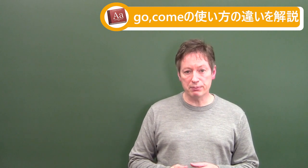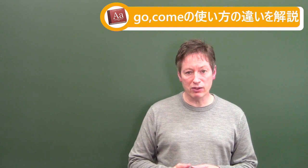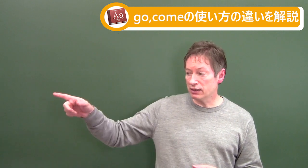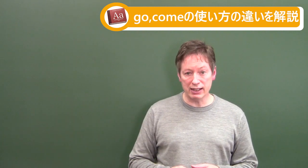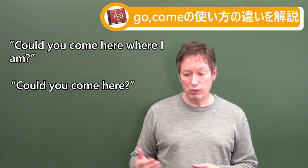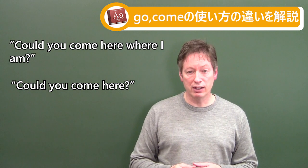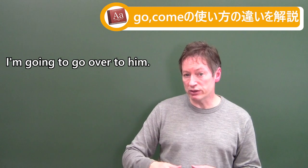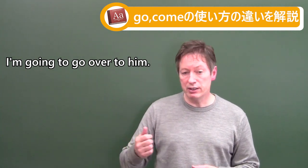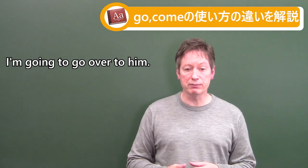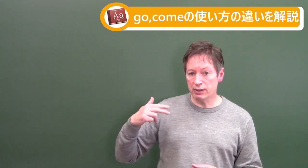First off, let me position things to make it easier. So I'm here and he's over there, and I'd like him to be where I am. So I'll say, 'Could you come here where I am?' He's there, and I'm going to go over to him. So I'll go over there to help him if he has a problem. So in that case, 'come' and 'go' — that may be easy enough.